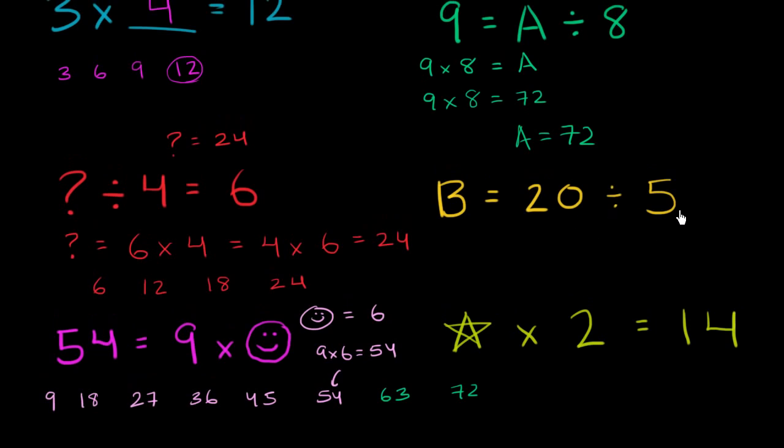B is equal to 20 divided by 5. Well, what's 20 divided by 5? Well, there's a couple of ways you could think about it. You could literally view this as the same thing as saying that 5 times B is equal to 20. So 5 times what is equal to 20? 5 times 1 is 5, 5 times 2 is 10, 5 times 3 is 15, 5 times 4 is 20. 5 times 4 is equal to 20. So that tells us that B must be equal to 4. B is equal to 4. So we could write 4 is equal to 20 divided by 5, which is absolutely true. 20 divided by 5 is equal to 4. 4 is equal to 20 divided by 5.